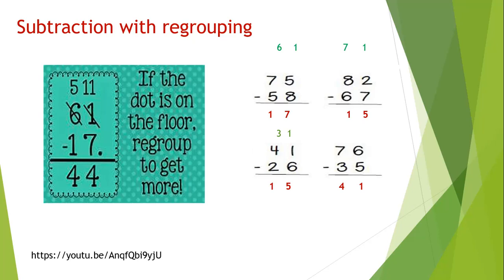Like we have 61 and 17. We cannot subtract 7 from 1, so what we have to do? We have to take borrow from 6. When we take borrow from 6, it becomes 5, and 1 becomes 11. When we subtract 7 from 11, we get 4. Then we have 5 minus 1, we get 4.